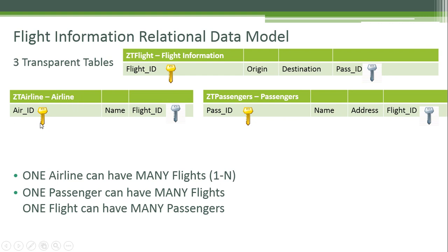We will also create a table for the airline, storing the airline ID, the name, and the flight ID as a secondary key. And a passengers table using the passenger ID as the primary key, storing the passenger's name, address, and a flight ID as a secondary key. This is because one airline can have many flights (one-to-N), one passenger can have many flights, and one flight can have many passengers.